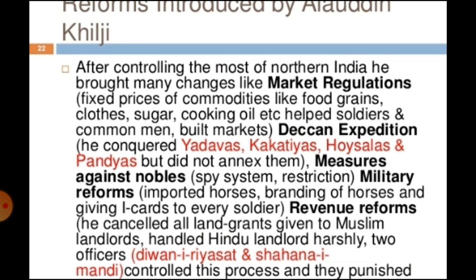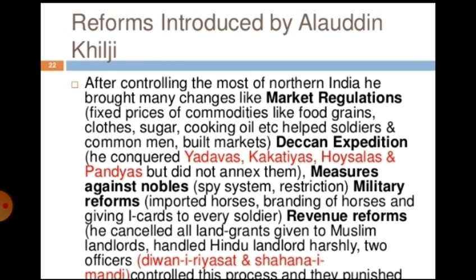Since the country was under Muslim rule, many grants had been given to Muslim landlords. Alauddin cancelled these grants as part of his revenue reform and forced a restructuring of these arrangements.